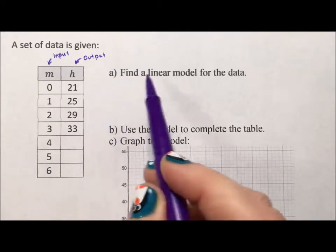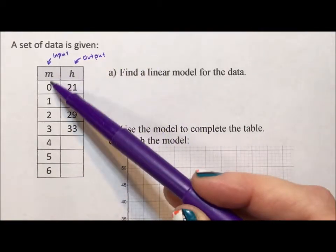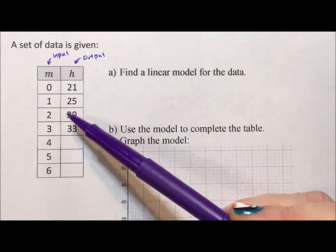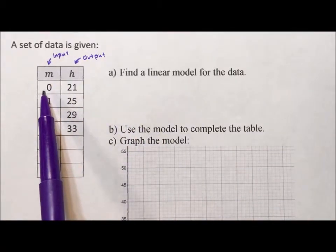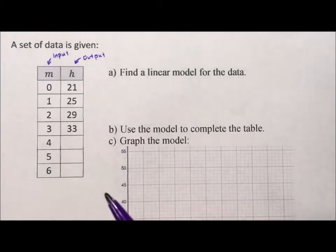What I'm really doing when I'm looking for a linear model is I'm trying to figure out how the input affects the output. I notice when the input is zero, that means it has zero effect, that my output is 21.